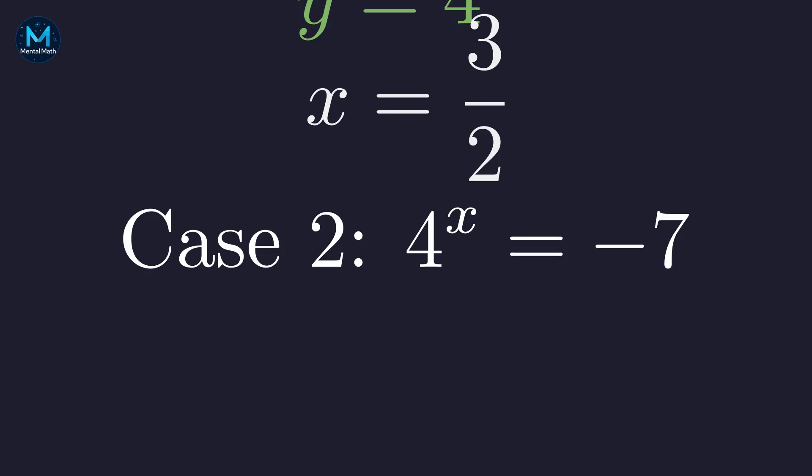Now the second case. 4 to the x equals negative 7. Here's the thing about this case. Let's visualize what y equals 4 to the x actually looks like.